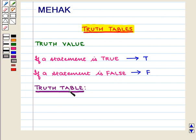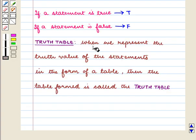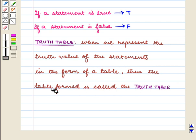So, a truth table may be defined as: when we represent the truth value of the statements in the form of a table, then the table formed is called the truth table.